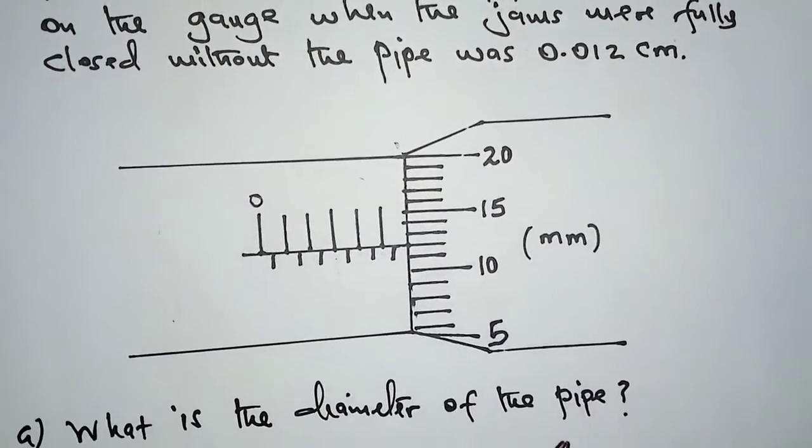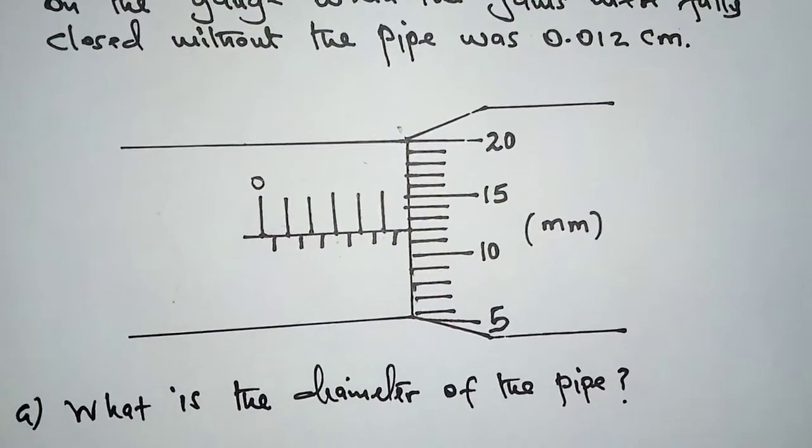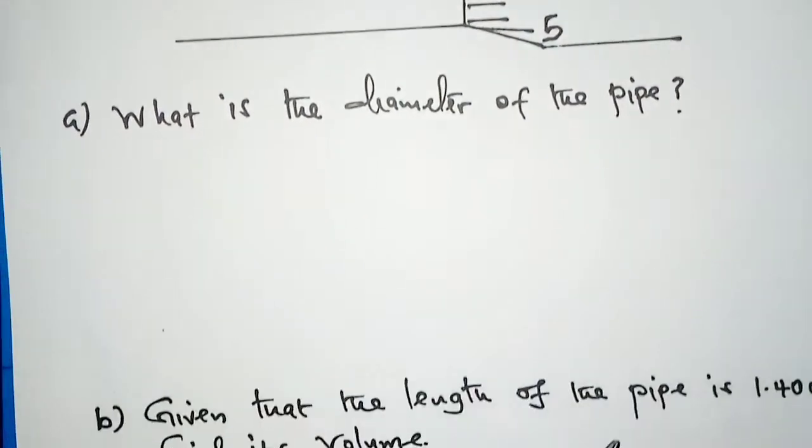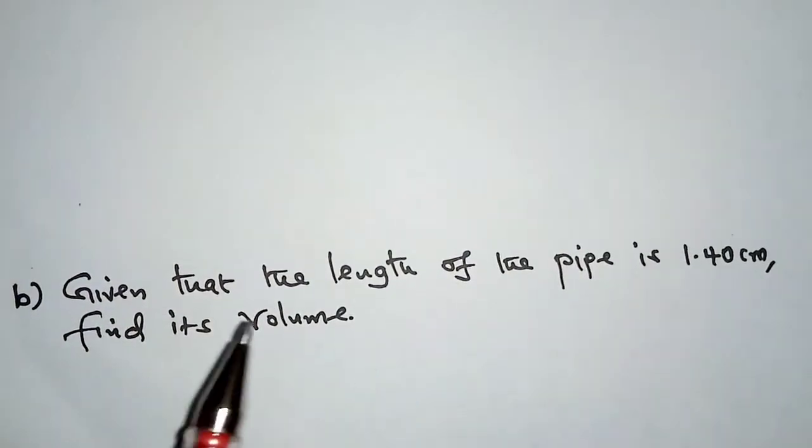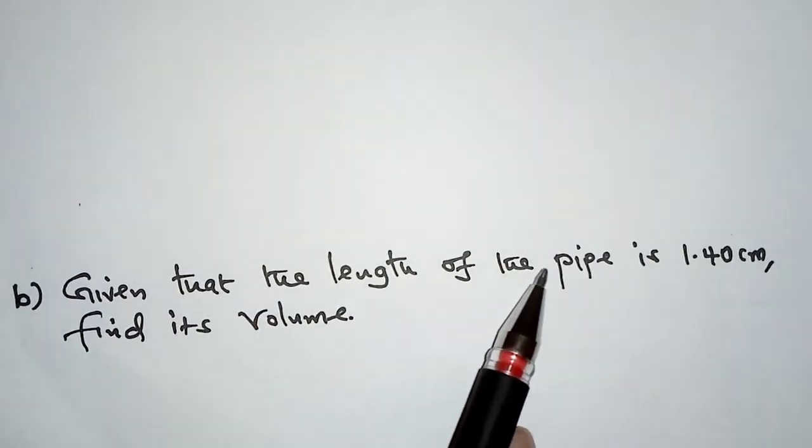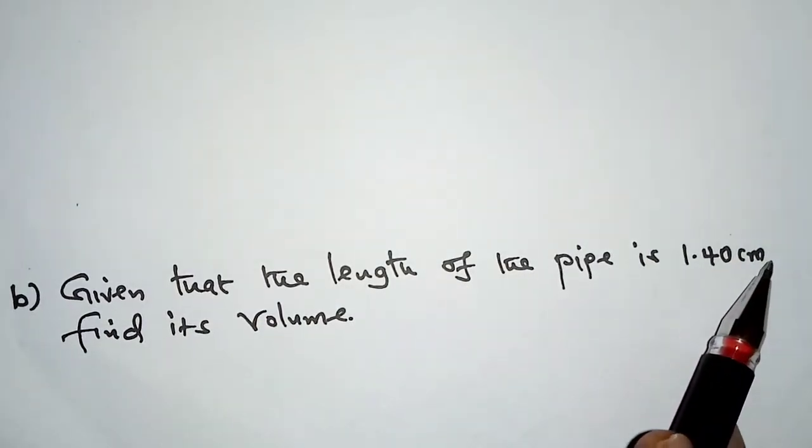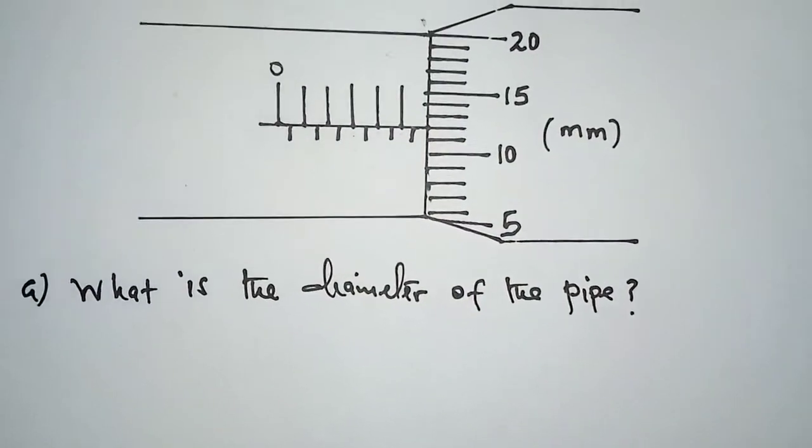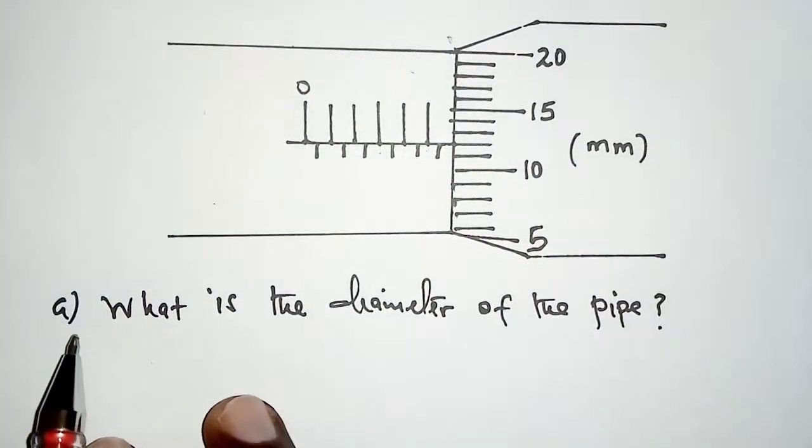So this is the diagram. Part A asks: what is the diameter of the pipe? And part B: given that the length of the pipe is 1.40 cm, find its volume. Let's do part A.